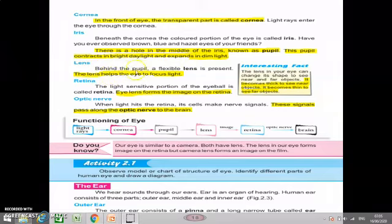Lens, behind the pupil a flexible lens is present. A flexible lens is present behind our pupil. The lens helps the eye to focus light. It helps to focus light.